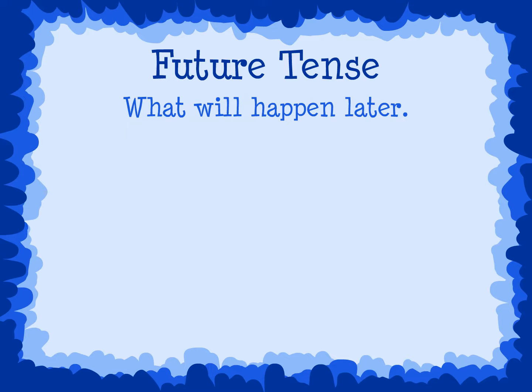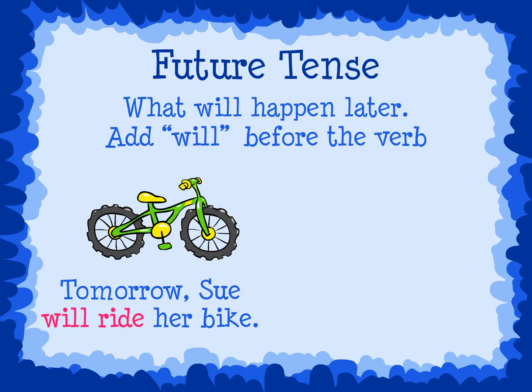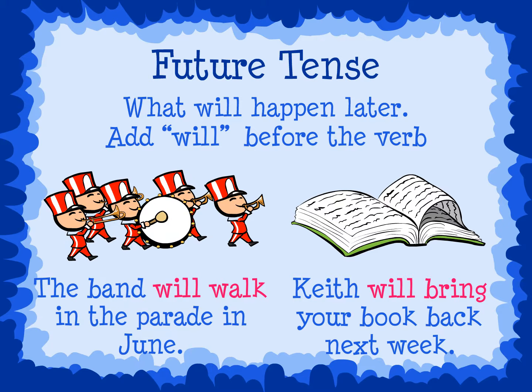When we are talking about an action that will happen later or in the future, we add WILL before the verb. For example: 'Tomorrow, Sue will ride her bike.' 'Keith will bring your book back next week.' 'The band will walk in the parade in June.' By adding the word WILL before the action verb, we show that the action will happen later in the future.